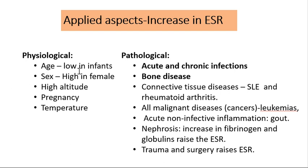Now for the applied part: ESR can vary. Increased ESR is found in physiological conditions such as advancing age (low in infants), females (due to lower PCV, so more plasma), high altitude, pregnancy, and temperature. Pathological causes of increased ESR include acute and chronic infections, bone and inflammatory diseases, connective tissue disease, malignant disease, and non-infective inflammations like autoimmune disease and nephrosis.